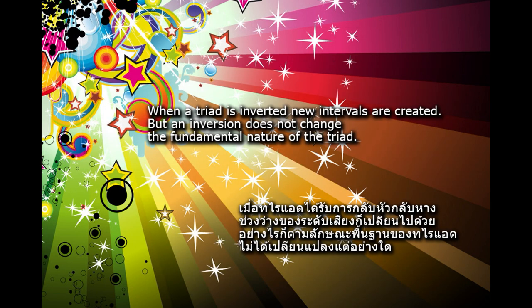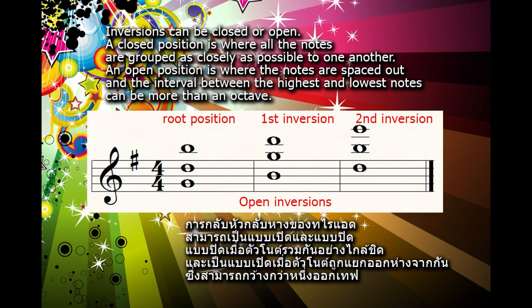When a triad is inverted, new intervals are created, but an inversion does not change the fundamental nature of the triad. Inversions can be closed or open. A closed position is where all the notes are grouped as closely as possible to one another. An open position is where the notes are spaced out, and the interval between the highest and lowest notes can be more than an octave.